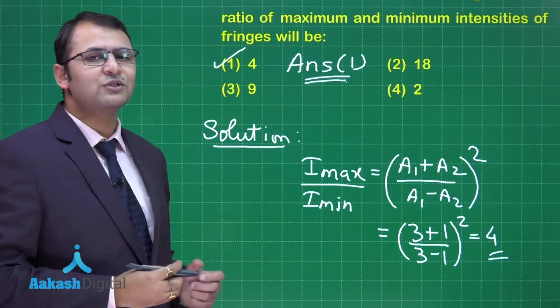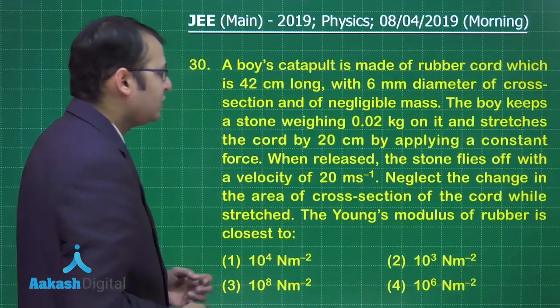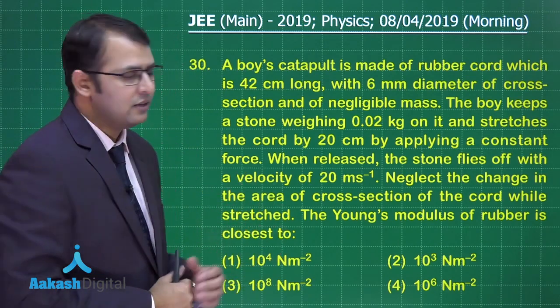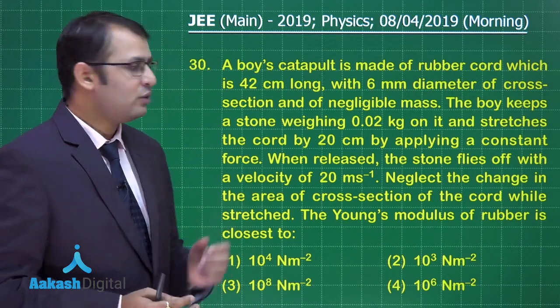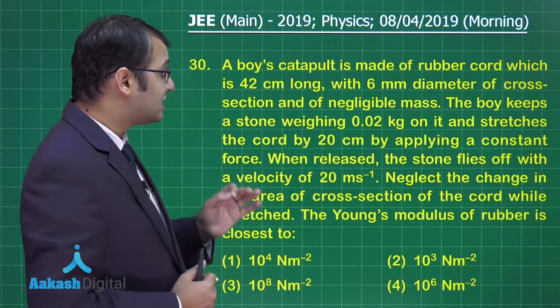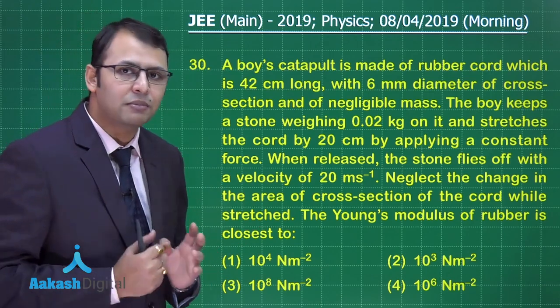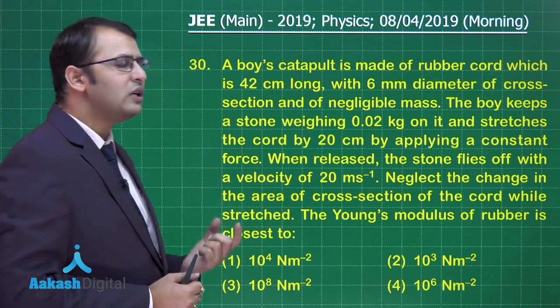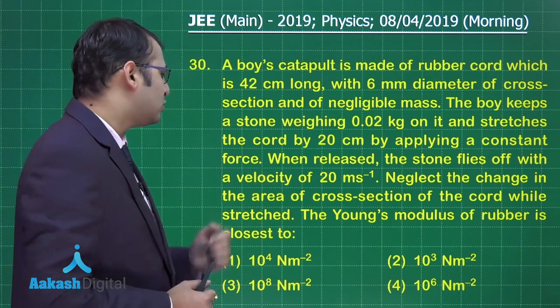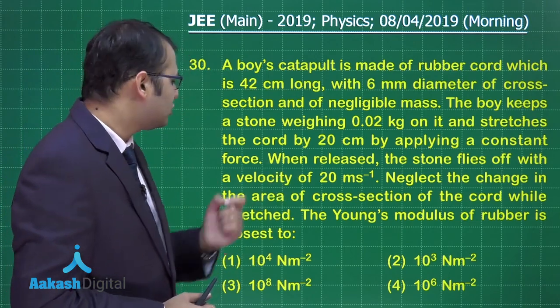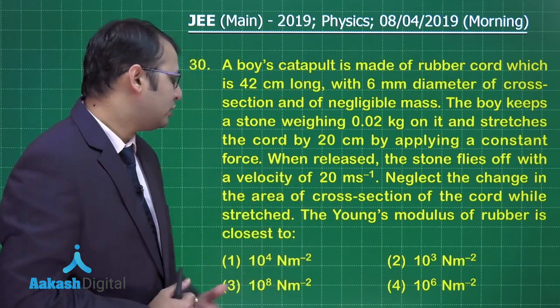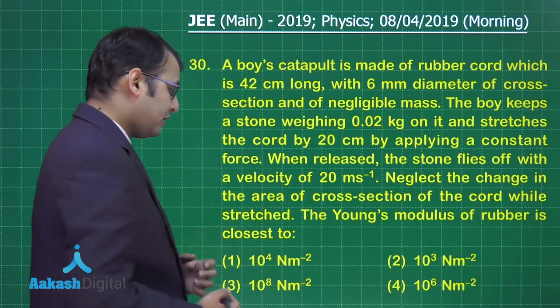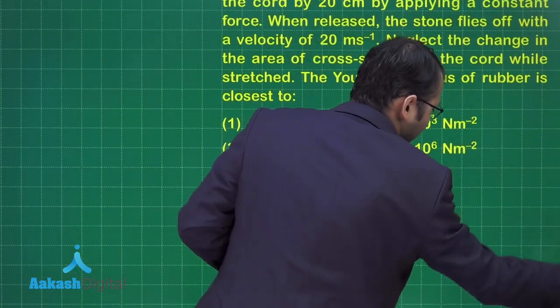Now let's move ahead with the last question of this paper, question number 30. This question belongs to mechanics, the topic of solids. A boy's catapult is made up of rubber cord which is 42 centimeter long with 6 mm diameter of cross-section and of negligible mass. The boy keeps a stone weighing 0.02 kg on it and stretches the cord 20 centimeter back by applying a constant force. When released, the stone flies off with a velocity of 20 meter per second. We have to neglect the change in the area of cross-section of the cord while stretching. The Young's modulus of the rubber would be.